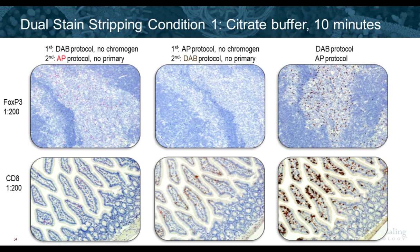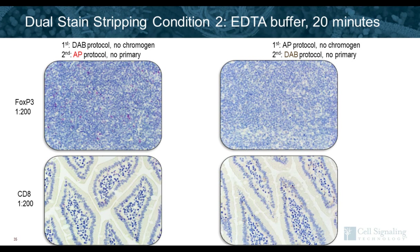Since the stripping step was not sufficient, the intensity was increased by switching to EDTA buffer for 20 minutes. With FOXP3, stripping was much better but still not entirely complete. With CD8, stripping was essentially 100% complete. When running alkaline phosphatase first and DAB second with EDTA stripping, complete stripping was achieved for both FOXP3 and CD8.